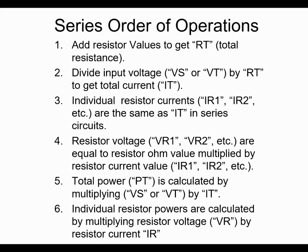What you're seeing in front of you is the order of operations for solving series circuits. The first thing you want to do is add up whatever resistor values are in the circuit to get what is known as RT — resistance total. Once you have the total resistance, you divide the input voltage, typically called Vs or voltage supply, sometimes Vt for voltage total, by that resistance total, and you get the total current in the circuit, which is IT.